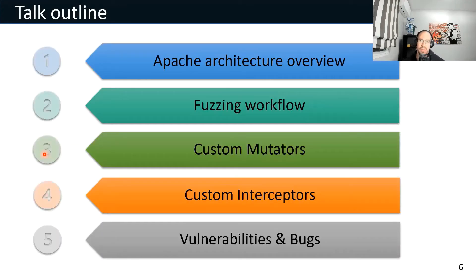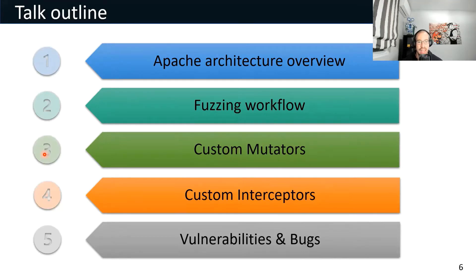The agenda for today has five points. In the first one, I will show a brief introduction about the Apache architecture. In the second one, I will show a summary of my fuzzing workflow. Then I will go over some of the custom mutators I have built and why. After that, I will explain some of the custom interceptors I have created. And in the last point, I will show you some of the vulnerabilities and bugs I have discovered.